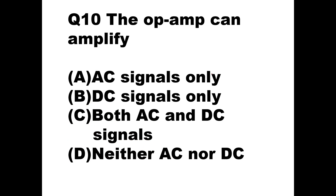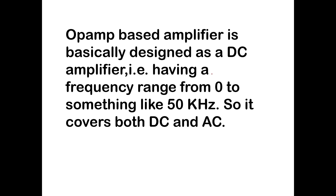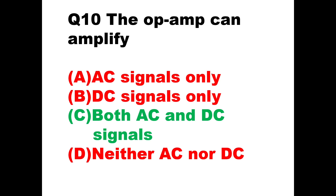Question number ten: the OPAMP can amplify what — AC signals only, DC signals only, both AC and DC signals, or neither? Option C is the right answer. An OPAMP-based amplifier is basically designed as a DC amplifier with a frequency range from 0 Hz to something like 50 kHz. Since it covers 0 Hz, it handles DC as well as AC range. So OPAMP can amplify both DC and AC signals.